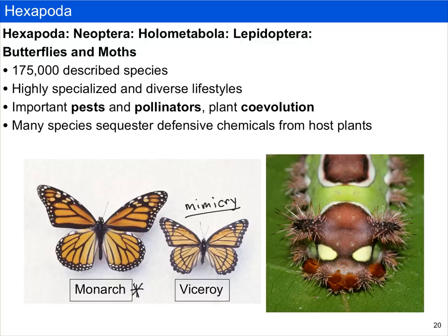Although viceroys look a lot like monarchs, they don't feed on milkweeds and are not noxious — this is an example of mimicry, which is really common among insects. Adults are not the only stage that uses defenses; larvae will do it as well. One larva shown has large eye spots to advertise itself as a predator, and a series of defensive spines that release a toxin if the caterpillar is attacked.